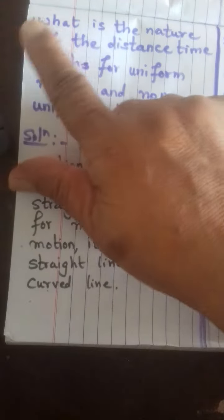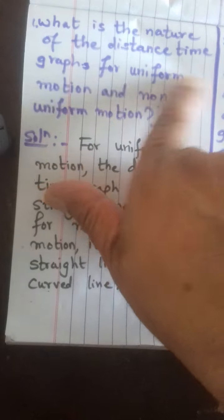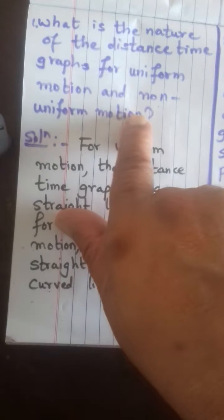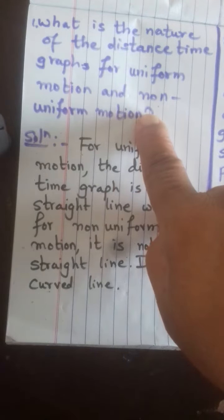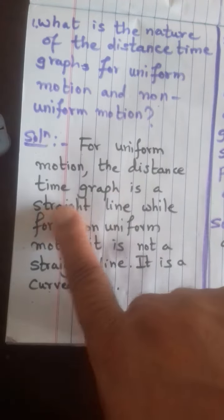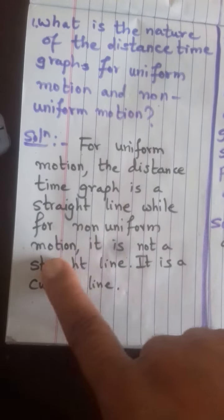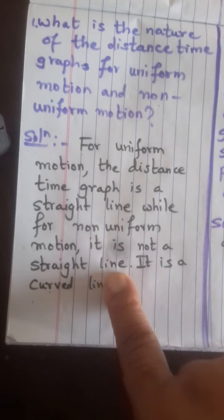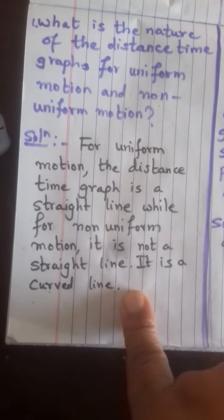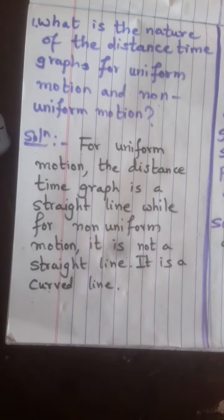The question on page number 107, in-text questions, first question: What is the nature of the distance-time graphs for uniform motion and non-uniform motion? The answer is: for uniform motion, the distance-time graph is a straight line, while for non-uniform motion it is not a straight line — it is a curved line.